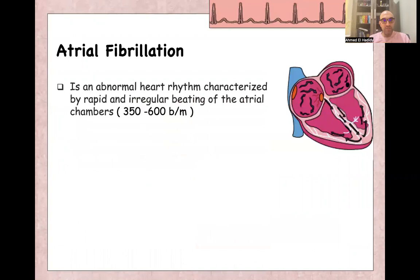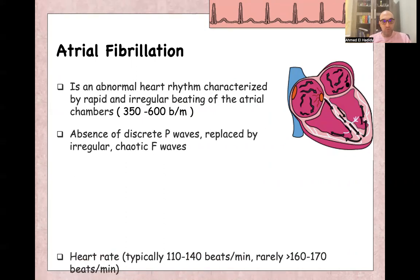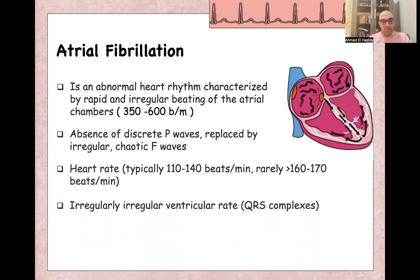Atrial fibrillation means abnormal heart rhythm characterized by rapid irregular beating of the atrial chambers around 300 to 600 beats per minute for both atria. There will be absence of P-waves, replaced by chaotic irregular fibrillatory waves. Heart rate is typically between 110 to 140 beats per minute and rarely exceeds 160 beats per minute. The ventricular rate will be irregularly irregular.